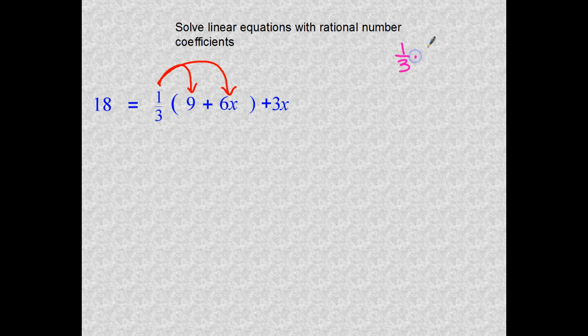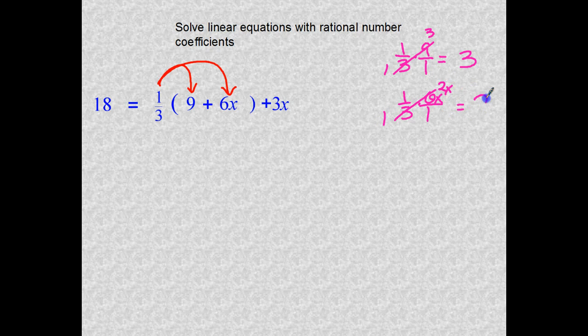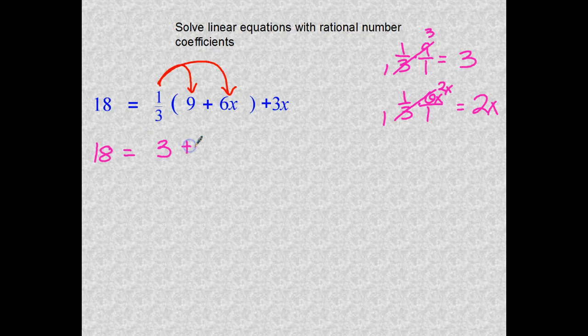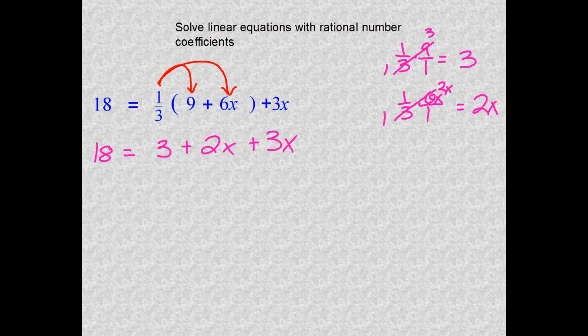Come off to the side here. One third multiplied by nine, and then one third will be multiplied by six X. This will cancel to one and two X, so this is two X. And nothing with this guy yet.